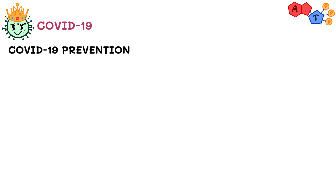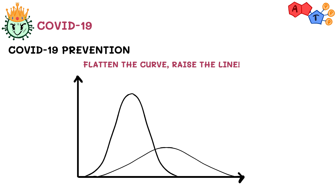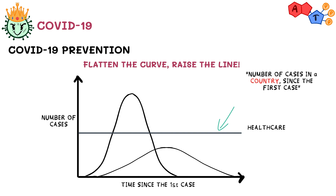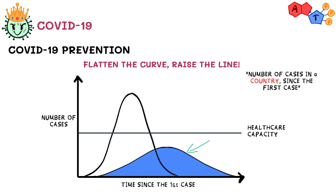You're helping to flatten the curve. The epidemic curve has the number of cases on the y-axis and time on the x-axis since the first case was identified. A line represents healthcare capacity in a specific location. If the graph exceeds this line, healthcare systems cannot accommodate more patients and we face serious problems. To flatten the curve, practice social distancing and follow the aforementioned tips.